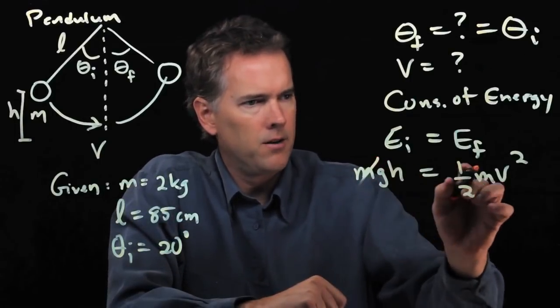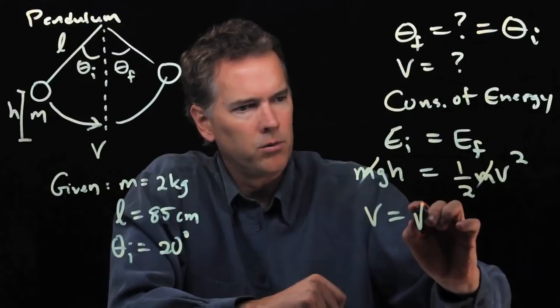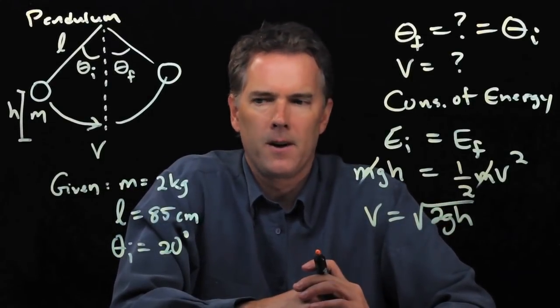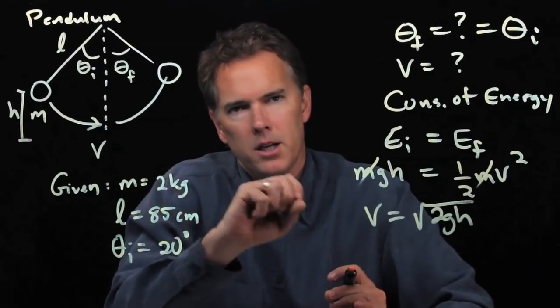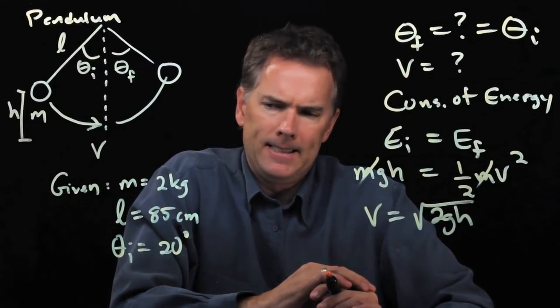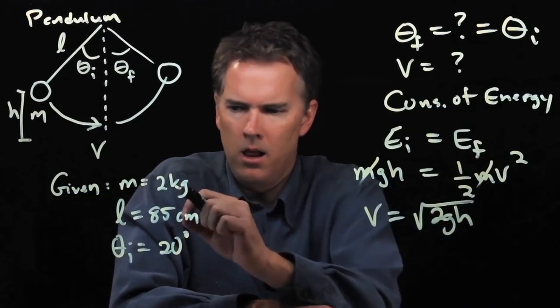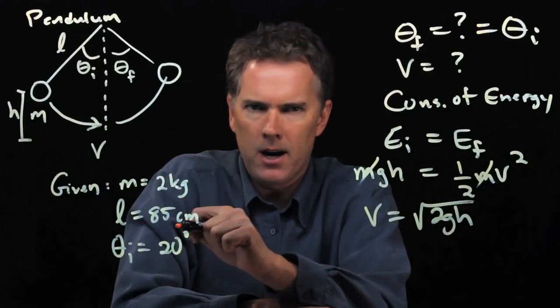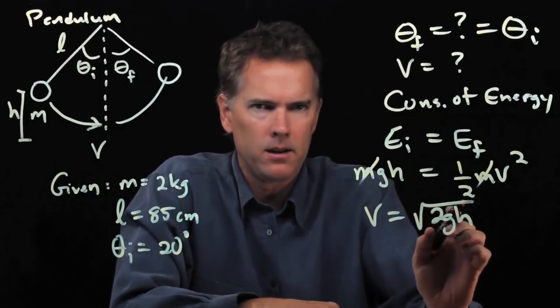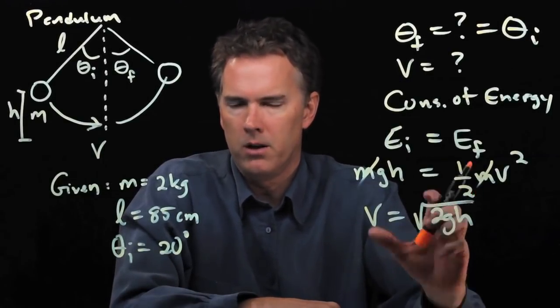The m's cancel out. We get v equals square root 2gh. It's nice, we didn't even really need the mass in this calculation. But we don't really have h. We know l, and we know theta i, so we need to combine those somehow to get h. This is slightly tricky, but we can do it.